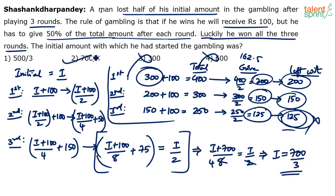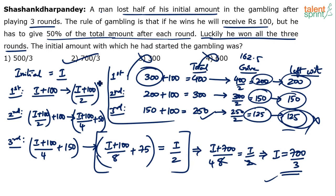We have discussed both solutions — how to solve using options and using the regular algebraic method. When using the regular method, you can condense steps: after each round, (previous amount + 100)/2 gives you what's left, applying this pattern three times and equating to i/2 gives the answer.